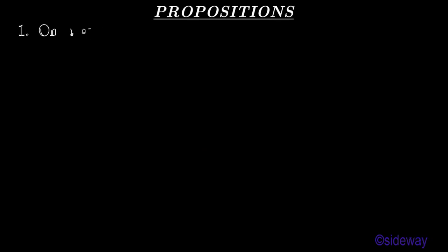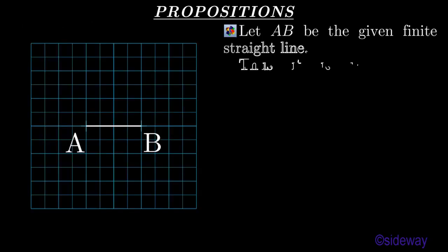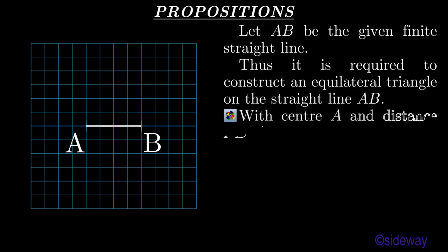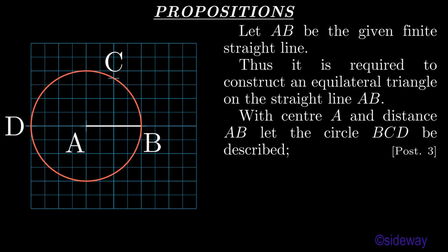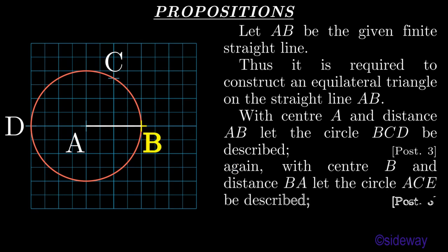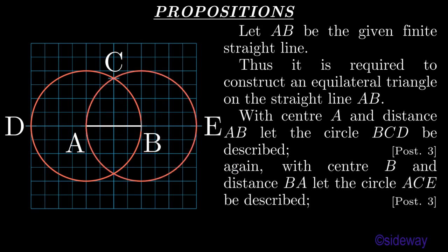Euclid's Elements Book 1. Propositions. Proposition 1: On a given finite straight line to construct an equilateral triangle. Let AB be the given finite straight line. Thus it is required to construct an equilateral triangle on the straight line AB. With center A and distance AB, let the circle BCD be described, by Book 1 Postulate 3. Again, with center B and distance BA, let the circle ACE be described, by Book 1 Postulate 3.